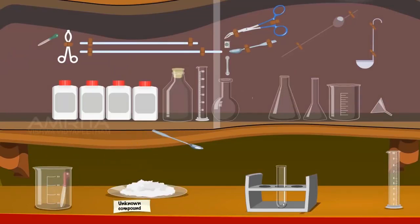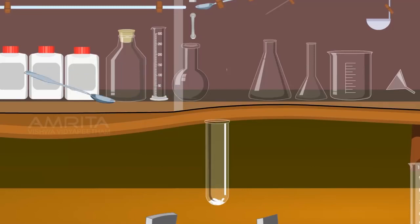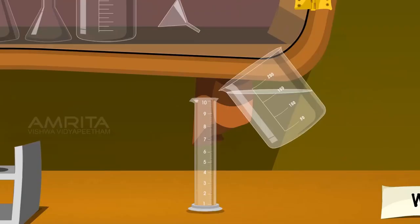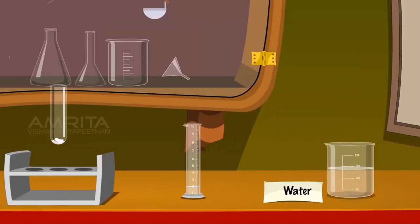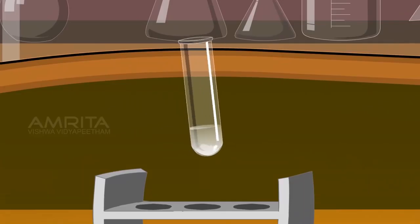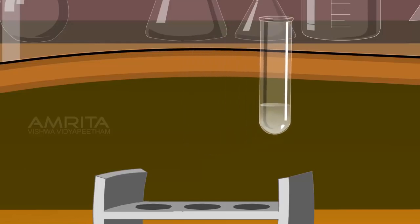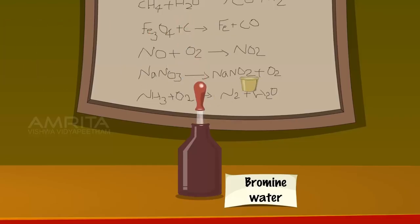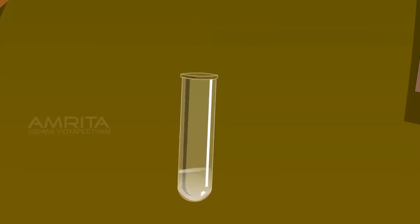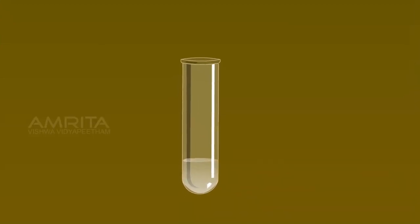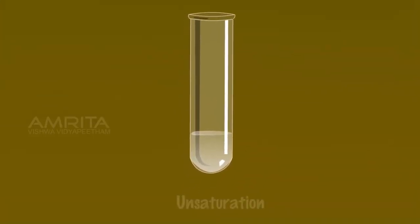Procedure: Take the unknown compound using a spatula and add it into a test tube. Take 2 ml of distilled water in a measuring cylinder and pour it into the test tube, shaking well. Take one to two drops of bromine water and add it to the test tube, shaking well. The disappearance of the orange-red colour of bromine indicates unsaturation; otherwise, it is saturation.